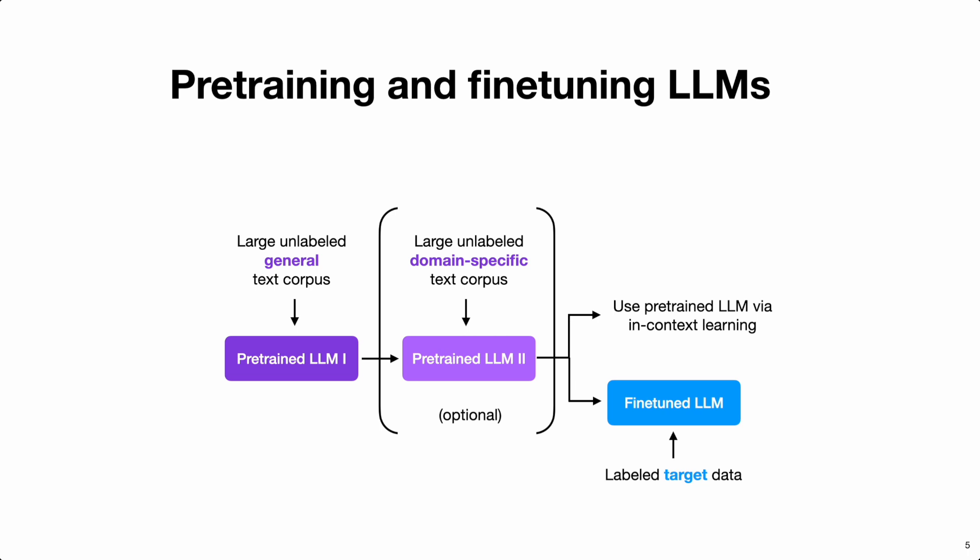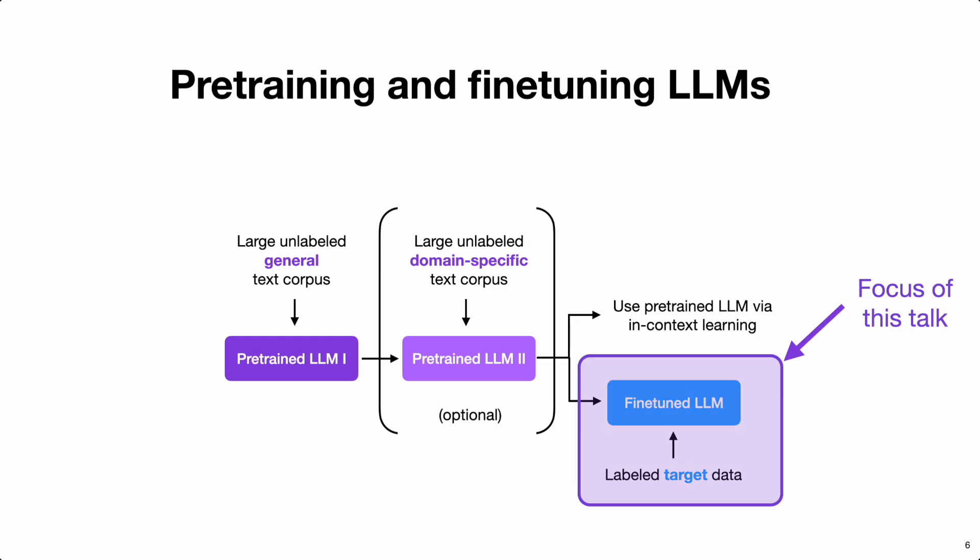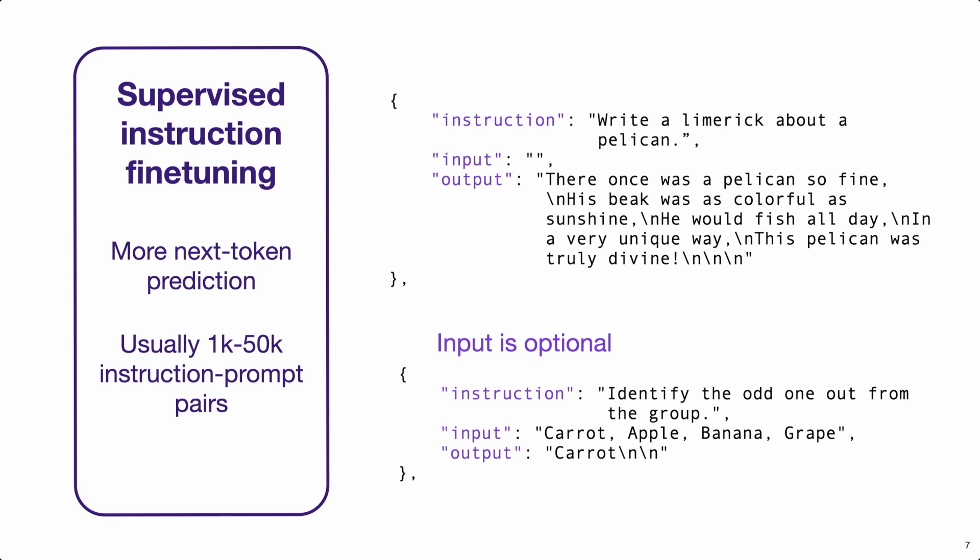Once the LLM is ready, we can either use it with in-context learning capabilities — where we ask questions and provide examples in the context — or we might want to fine-tune the LLM to better follow instructions. This talk focuses on better instruction fine-tuning. Specifically, I only used supervised instruction fine-tuning, where we have a dataset consisting of an instruction and optionally an input, and the LLM's task is to generate the output — usually a next-token prediction task.